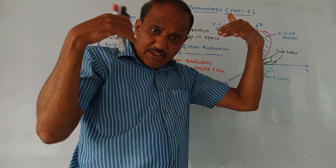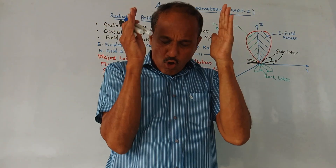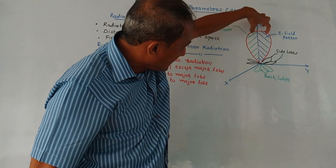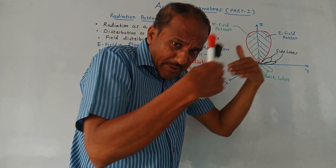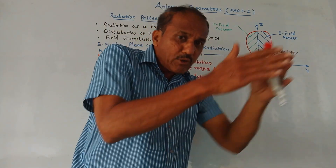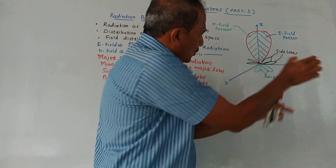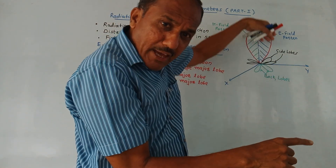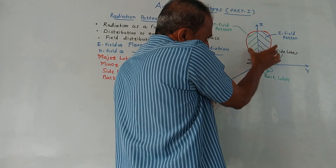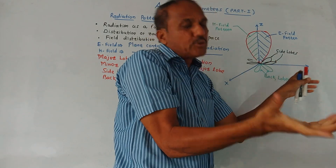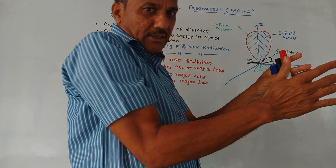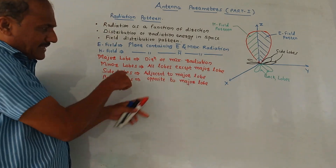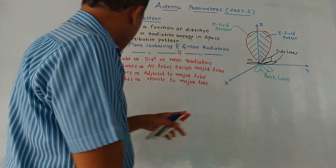Apart from the Major Lobe, there are certain different lobes called minor lobes — all lobes except the Major Lobe are called minor lobes. Next are side lobes: in other directions there are also some radiation patterns called side lobes. Side lobes are smaller lobes — smaller radiation patterns which are in the same hemisphere as the Major Lobe — having less energy. Side lobes are adjacent to the Major Lobe.